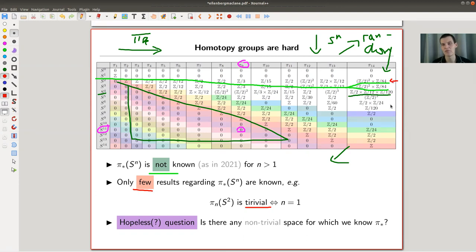And it seems to be like a hopeless question. So we're talking about spheres, right? Is there any space that is easier than the sphere, which is not completely trivial? So a point is easier than the sphere or anything else, but not really. So this seems to be a hopeless question: is there any space for which we know all π's? That sounds pretty hopeless to me just looking at the table of homotopy groups of spheres.